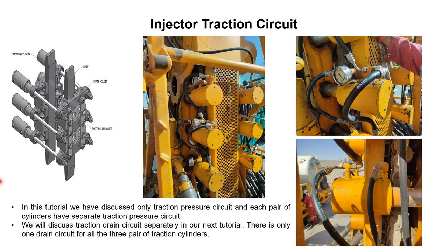In this tutorial, we have discussed only the traction pressure circuit, and each pair of cylinders has a separate traction pressure circuit. As far as the traction drain circuit is concerned, we have only one drain circuit for all three pairs of hydraulic cylinders. This means that on these hydraulic cylinders we have two ports: the first pressure port is for the pressure circuit and the back-side port is for the drain circuit. The port towards the chain side is for the pressure circuit, and for each pair of hydraulic cylinders there is a separate traction pressure circuit.